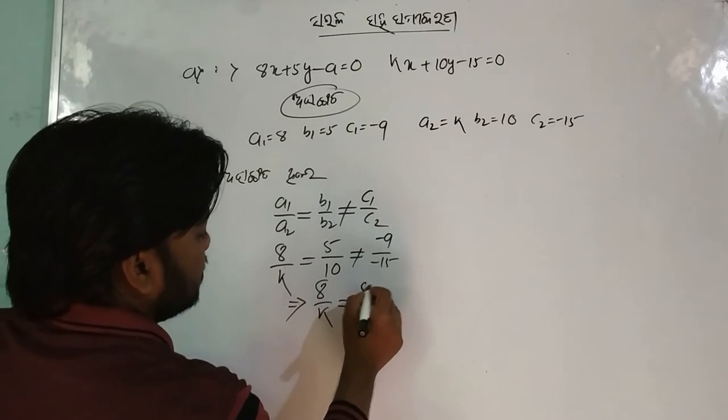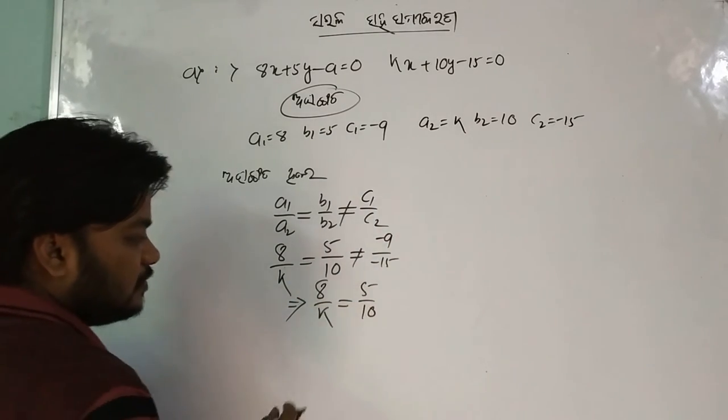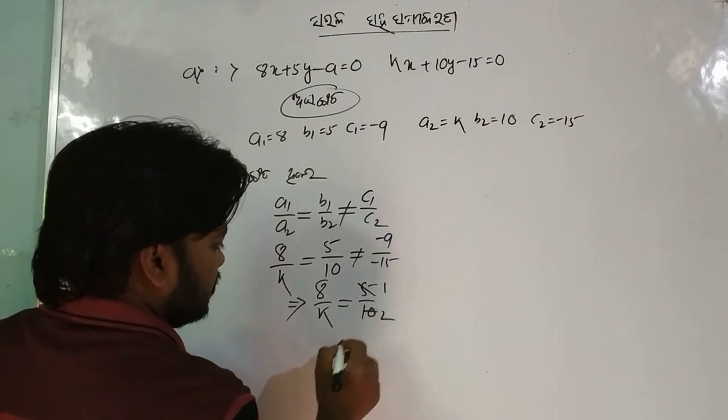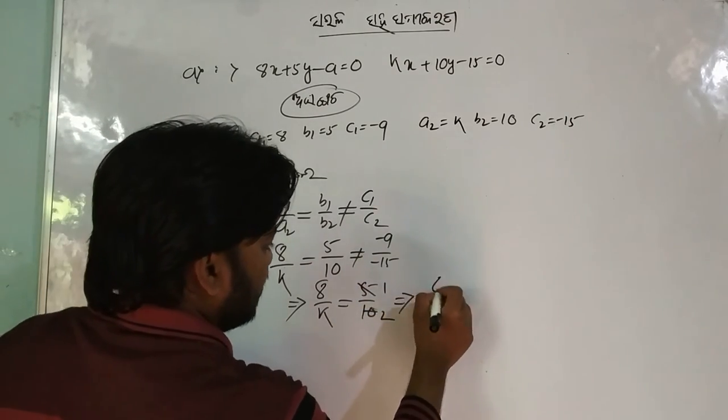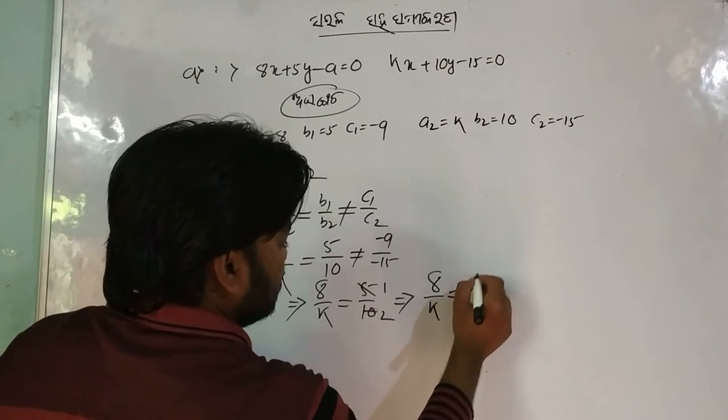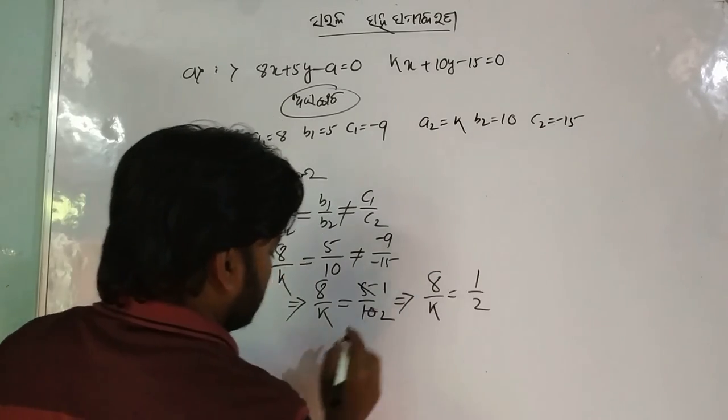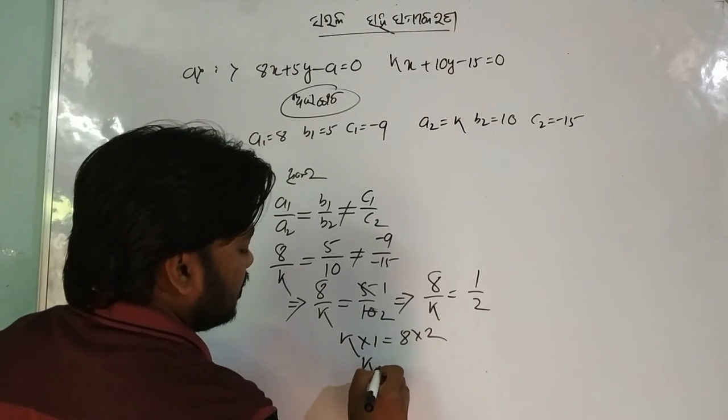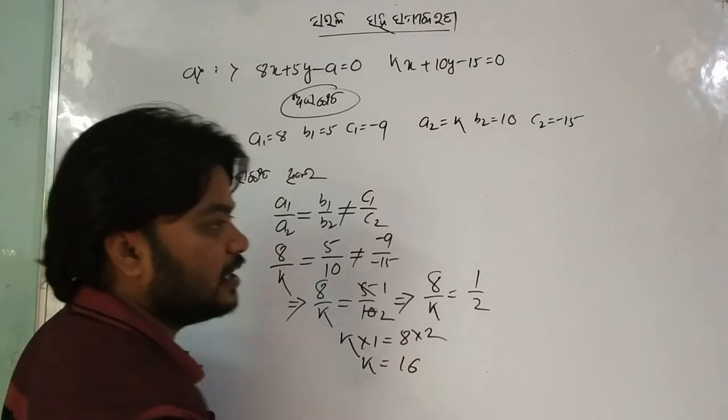c1 is equal to a1 by a2, then c1 is equal to 1. So 8 by K is equal to 5 by 10. 5 by 5 and 5 by 10, so K is equal to 1 by 2. K is equal to 8 into 2, then K is equal to 16.